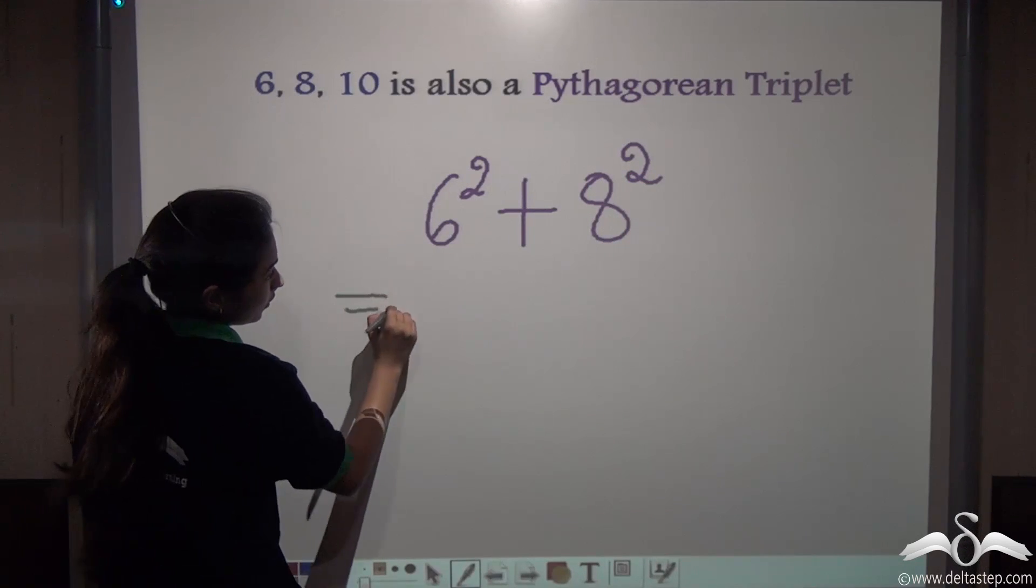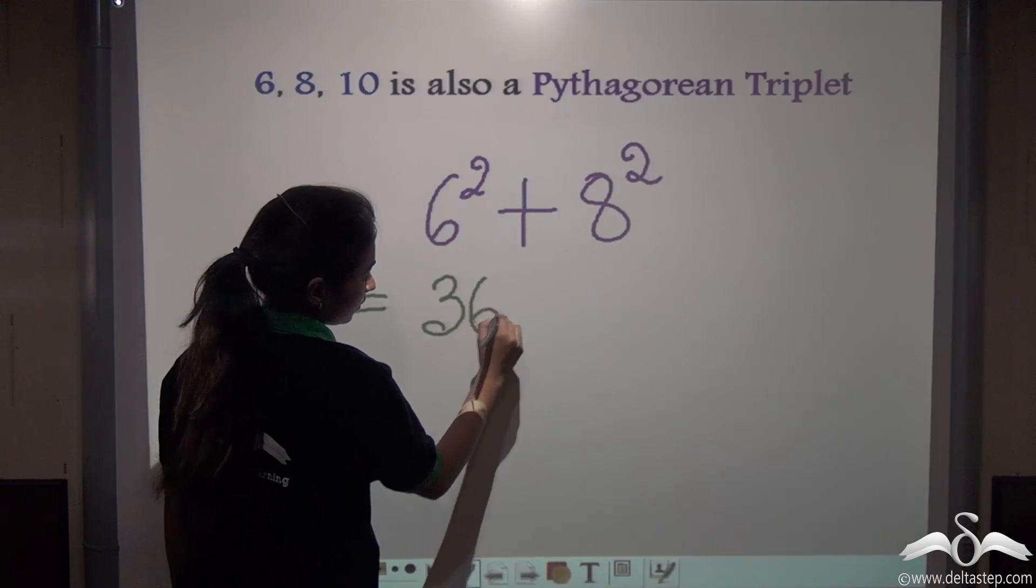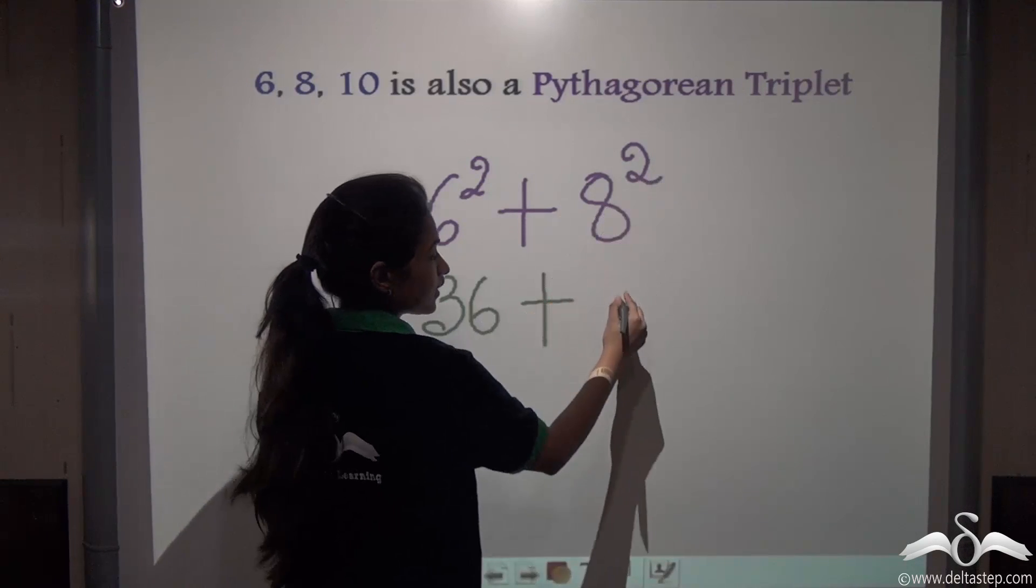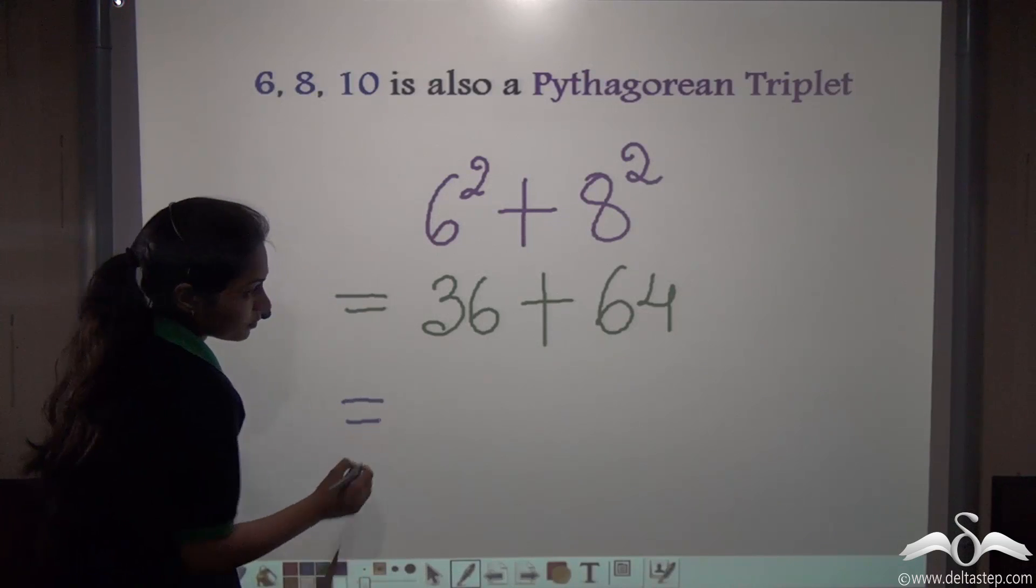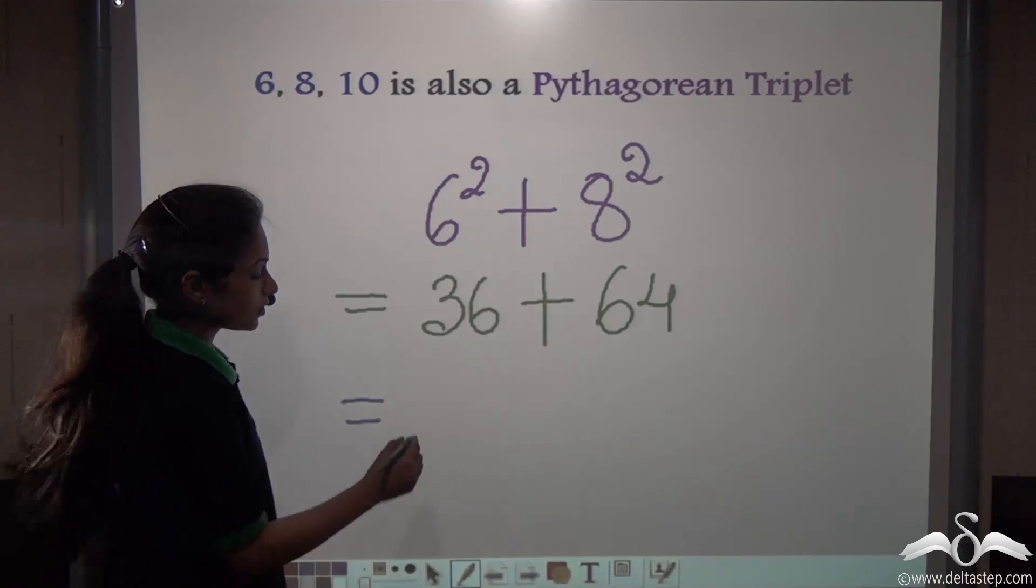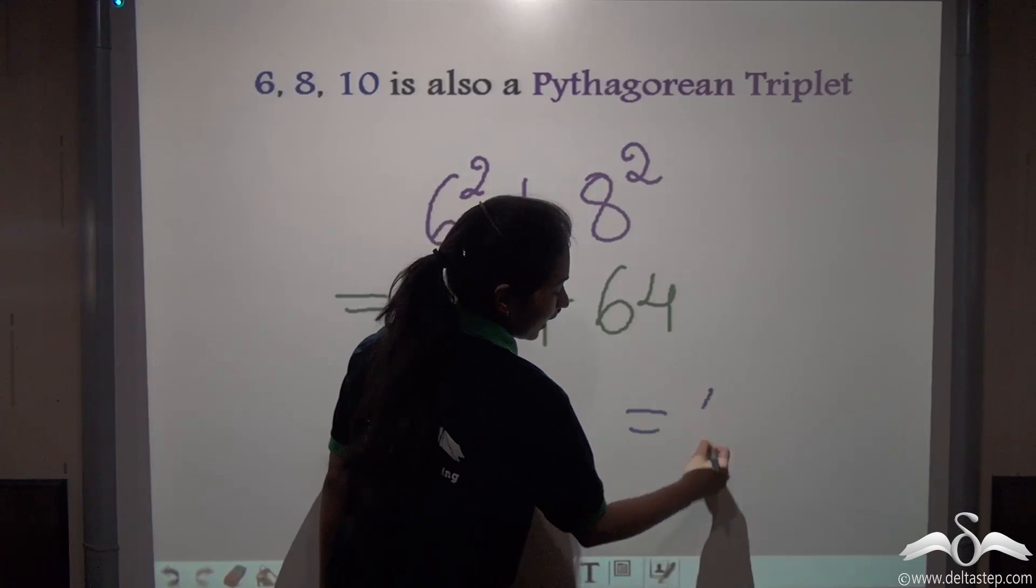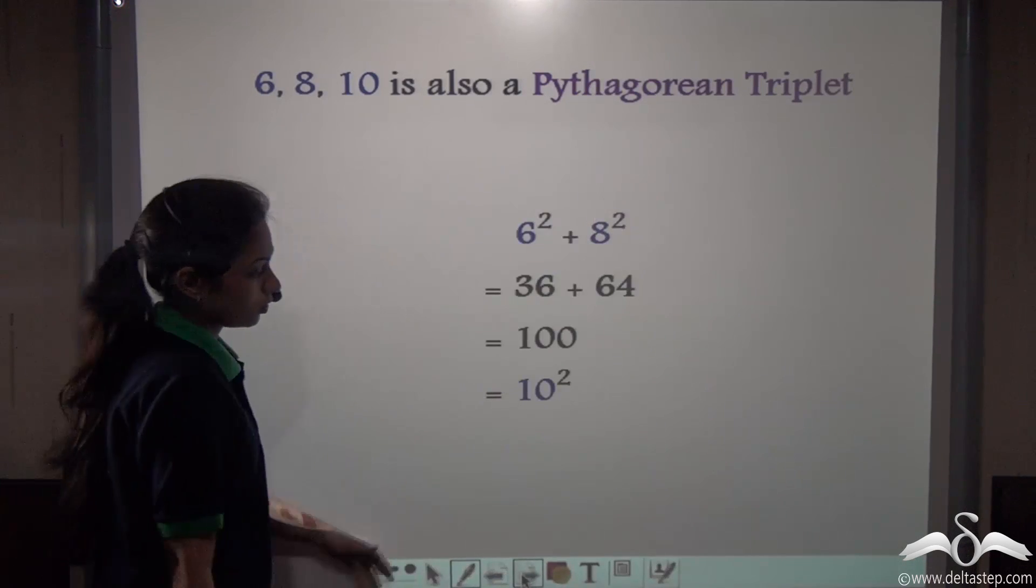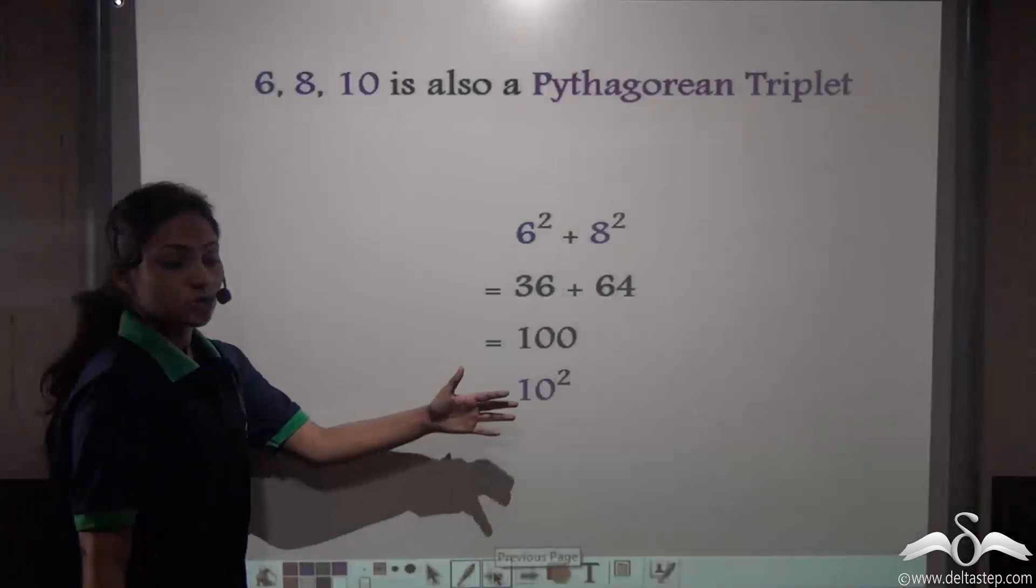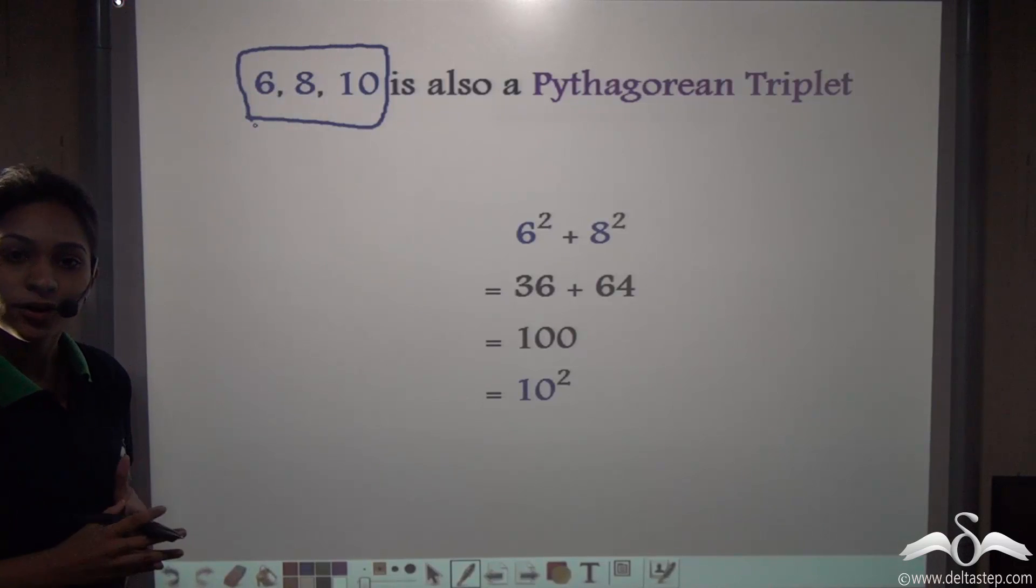Let's see what I get. 6 squared is 6 into 6, which is 36, plus 8 squared is 64. Well that gives me 36 plus 64 is 100, and that is actually what? 10 squared. See, we got this. So we can say that 6, 8, and 10 is also a Pythagorean triplet.